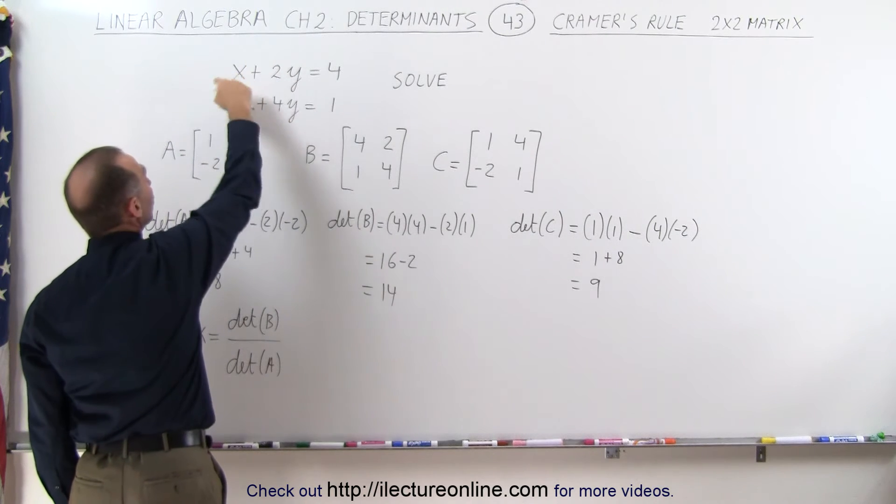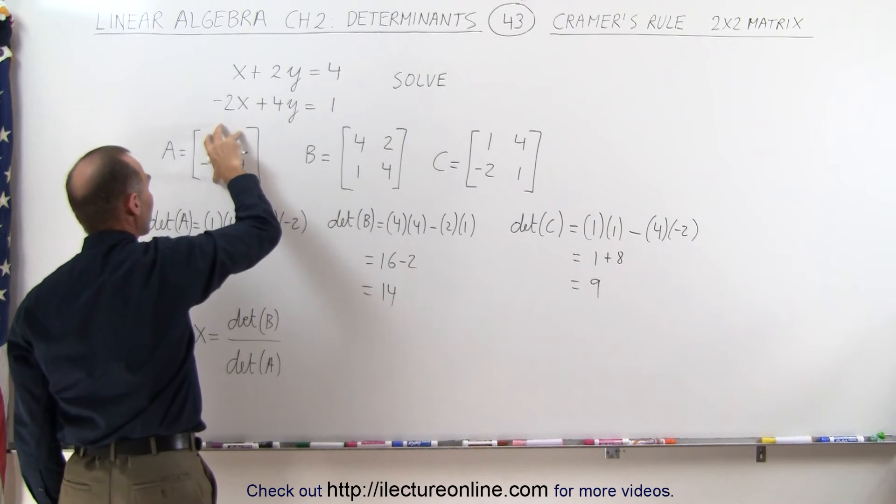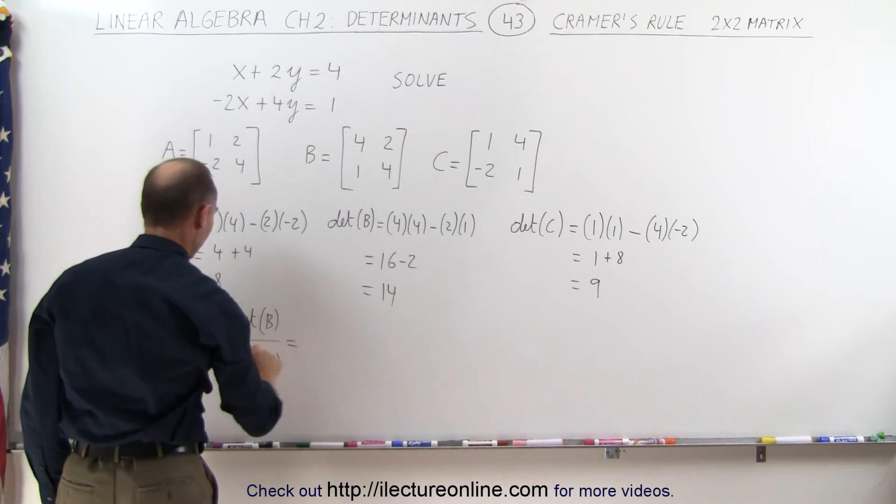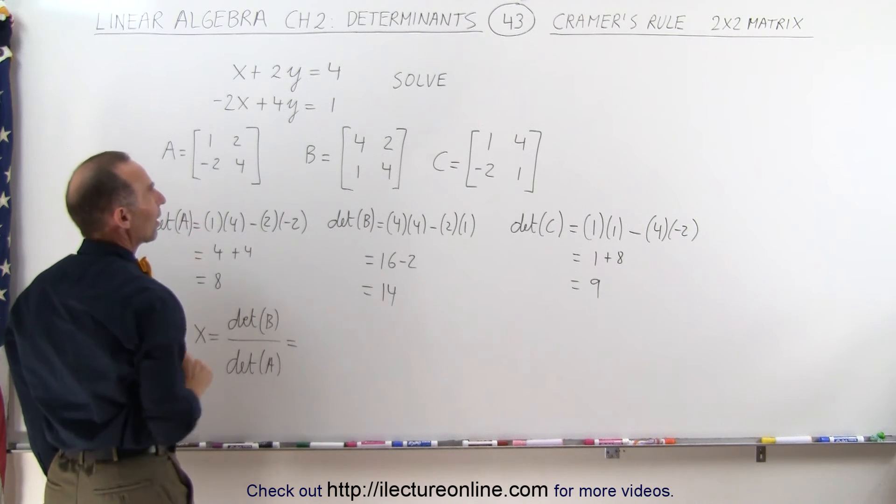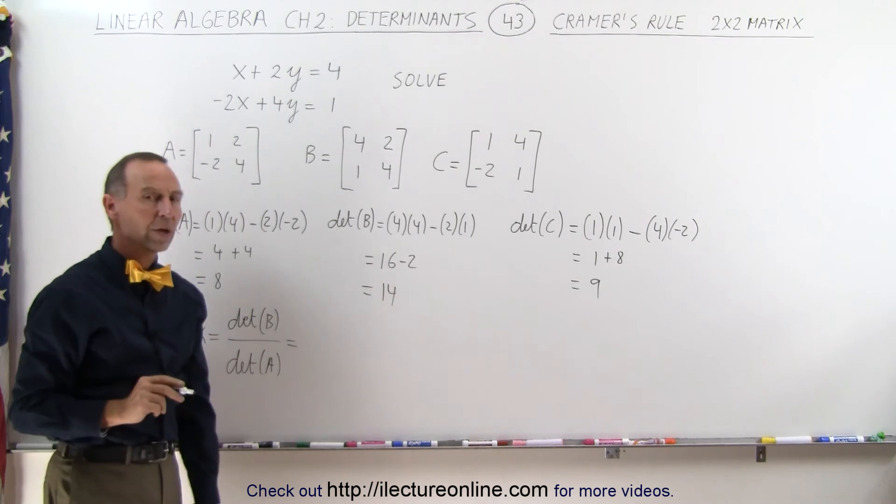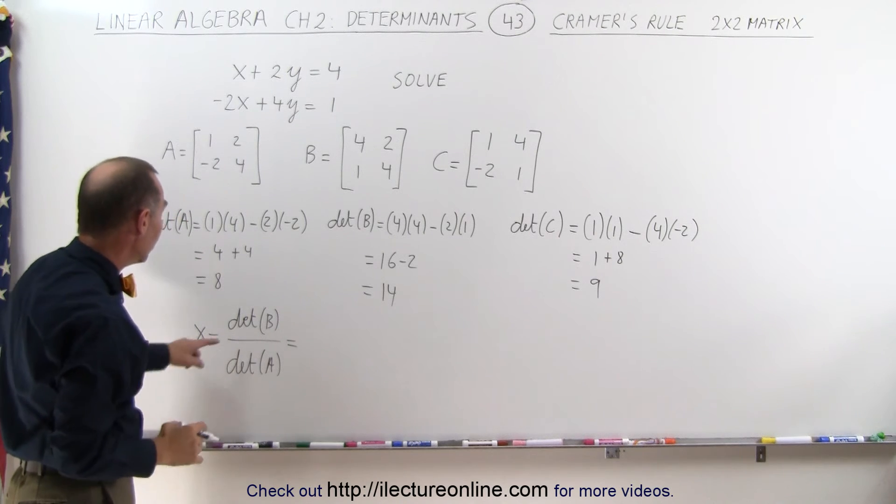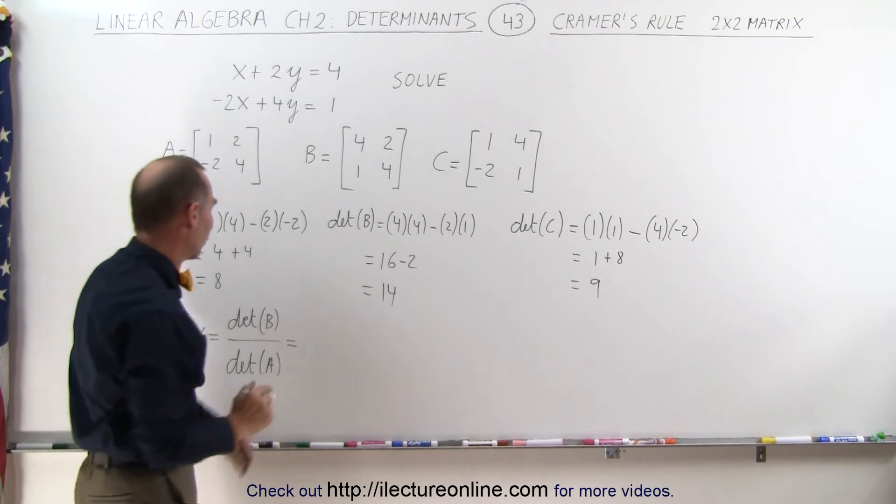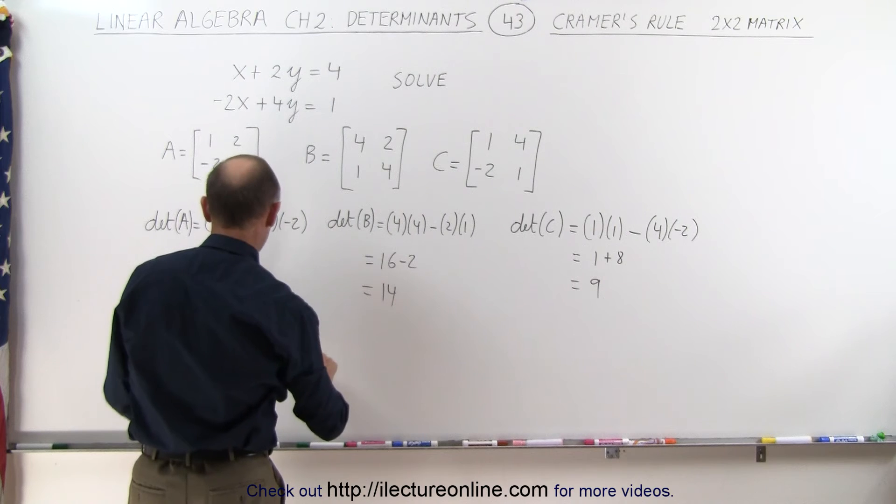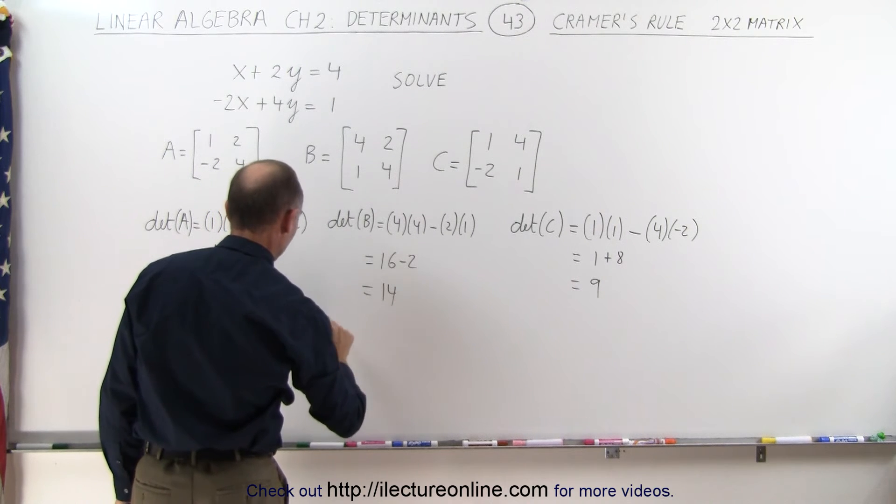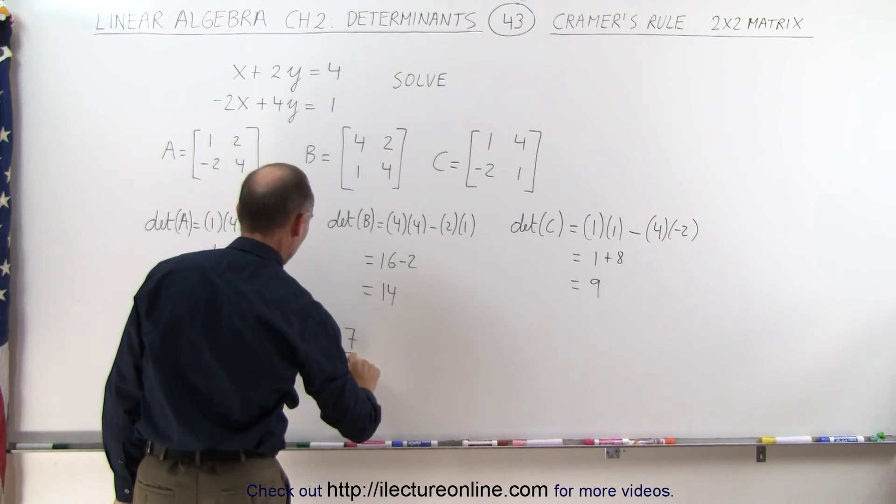This is where we just simply took all the coefficients of the X and Y variables here, and that will then give us the value for X that satisfies that set of equations. Well, that's quite amazing, but it does. So the determinant of B is equal to 14, and the determinant of A is equal to 8, and that simplifies to 7 over 4.